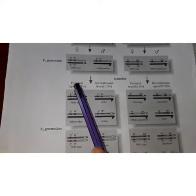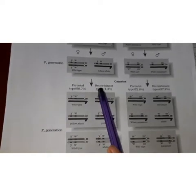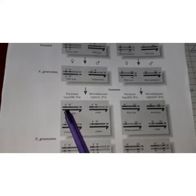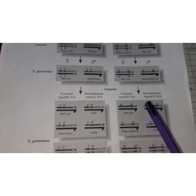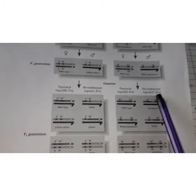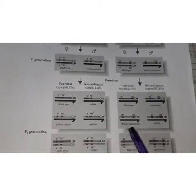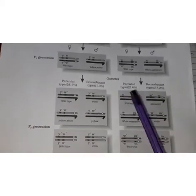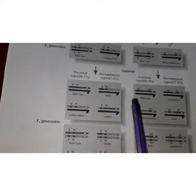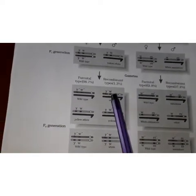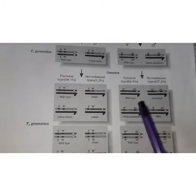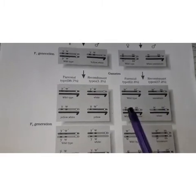In the F2 generation, the rate of recombination is only 1.3% in the case of genes that are tightly linked, whereas the rate of recombination is 37.2% in the case of genes that are loosely linked. This diagram suggests that genes which are tightly linked have a much lower rate of recombination compared to genes that are loosely linked.